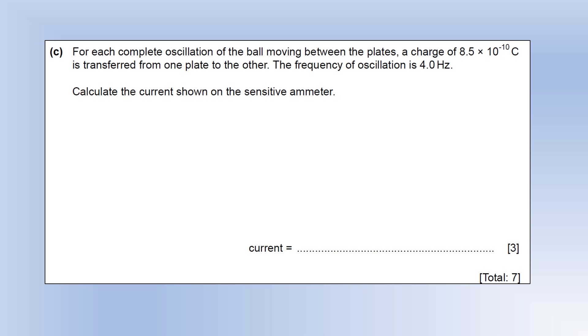For each complete oscillation of the ball moving between the plates, a charge of 8.5 times 10 to the minus 10 coulombs is transferred. The frequency of oscillation is 4 Hz. Calculate the current. We're going to use Q equals IT, and remember rearranging that, current is charge divided by time. We've got an oscillation here, so the time is going to be essentially the time period of oscillation. If you remember from learning about waves, time period is equal to 1 over the frequency, so we can actually replace that with I equals QF.